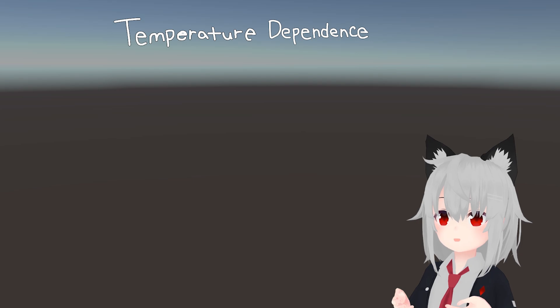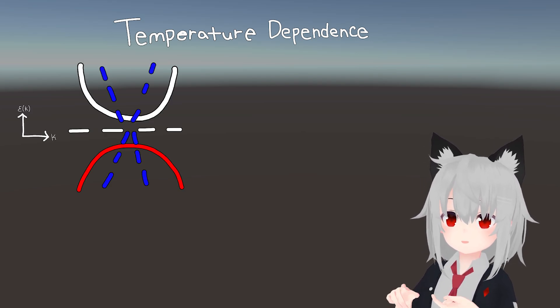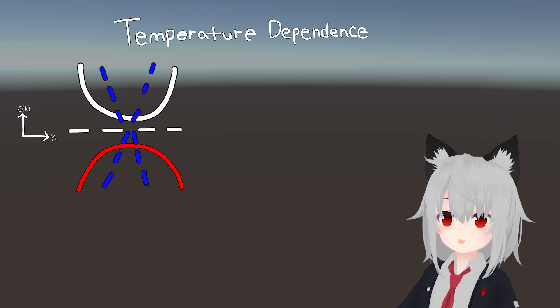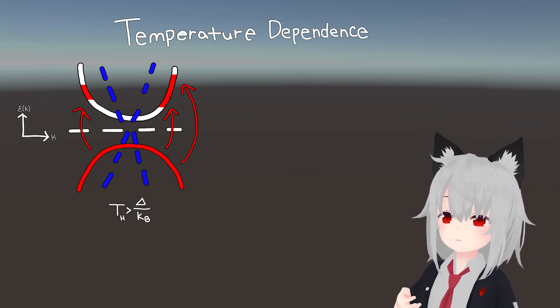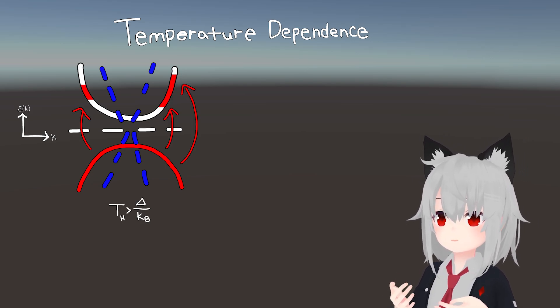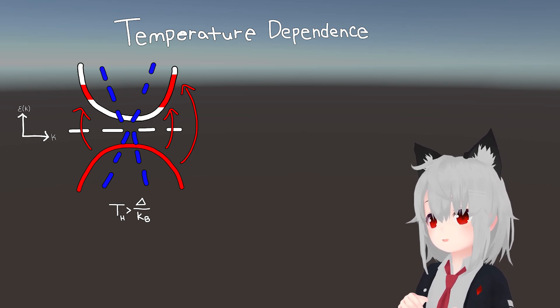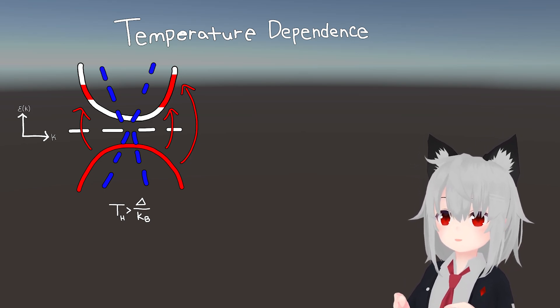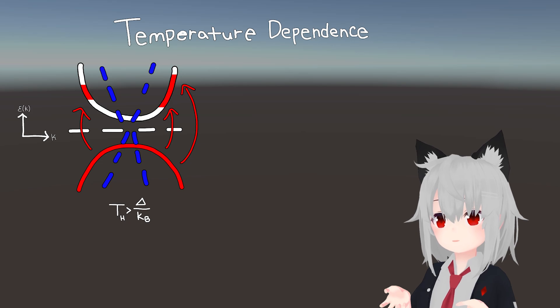Okay, so how does this change in the presence of gapless edge states? Well, in this case, you'd have to superimpose the gapless dispersion on top of the original insulating band structure. Now, it turns out that at sufficiently high temperatures, this doesn't really change much because the thermal energy kicks electrons upwards and makes them mostly interact with the original band structure anyways.